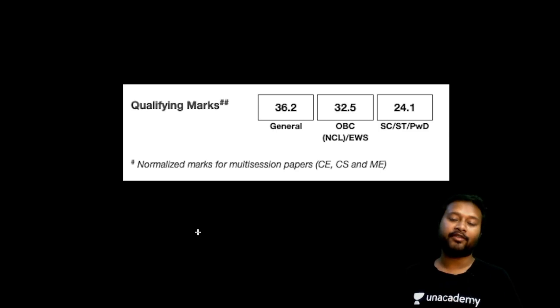For OBC category 32.5 marks, for other reserved categories it's 24.1 marks. The cutoff is too high and the reason you all know - the paper was very simple, it was very approachable. The questions were very, very simple, of very basic level. I would say some of them were of BSc level, some were of IIT-JEE level, even not of JAM level.